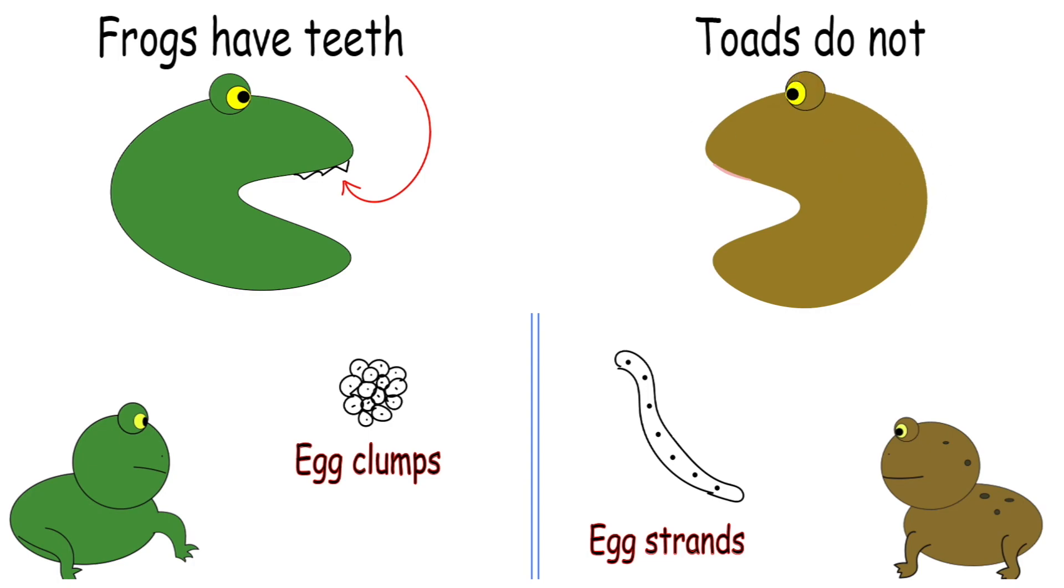Frogs have small teeth on their upper jaw, while all toads do not.